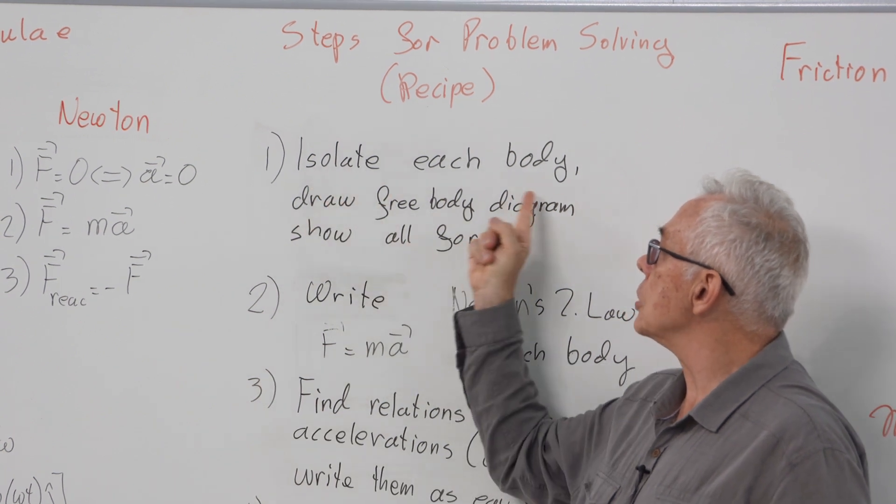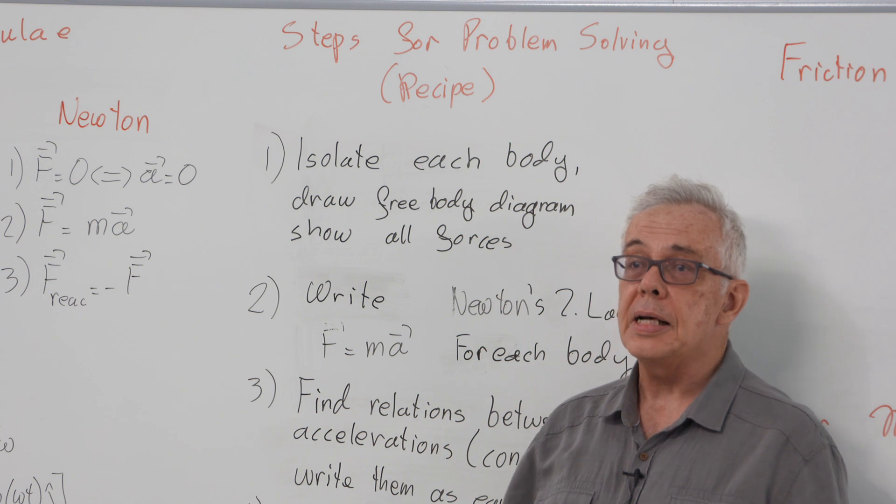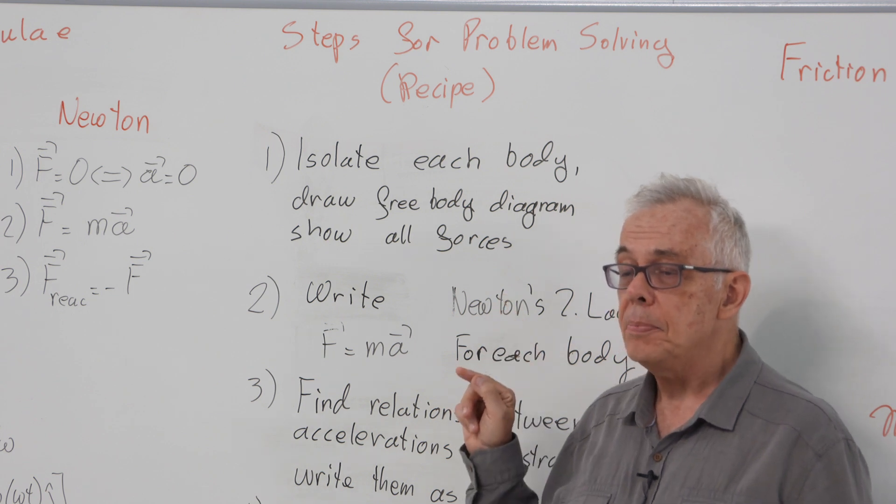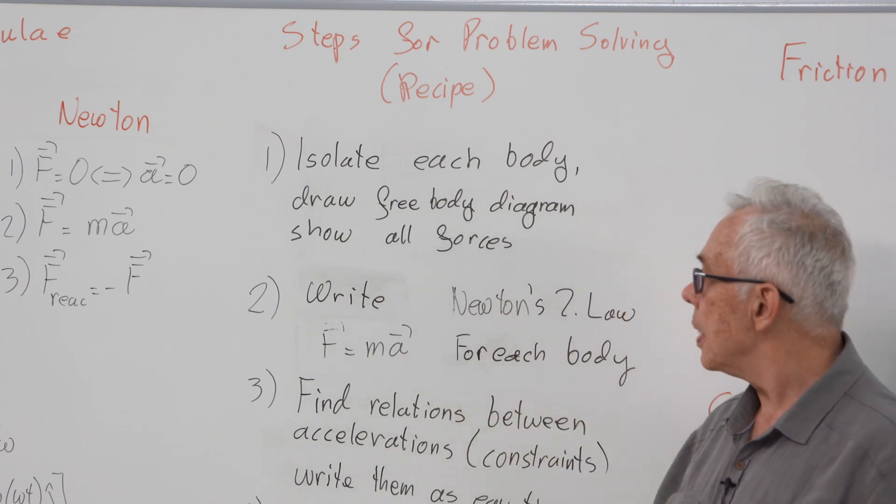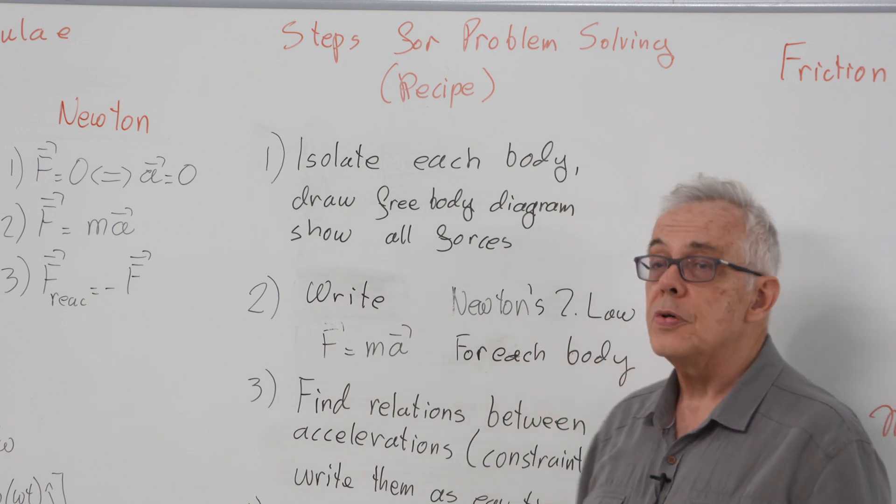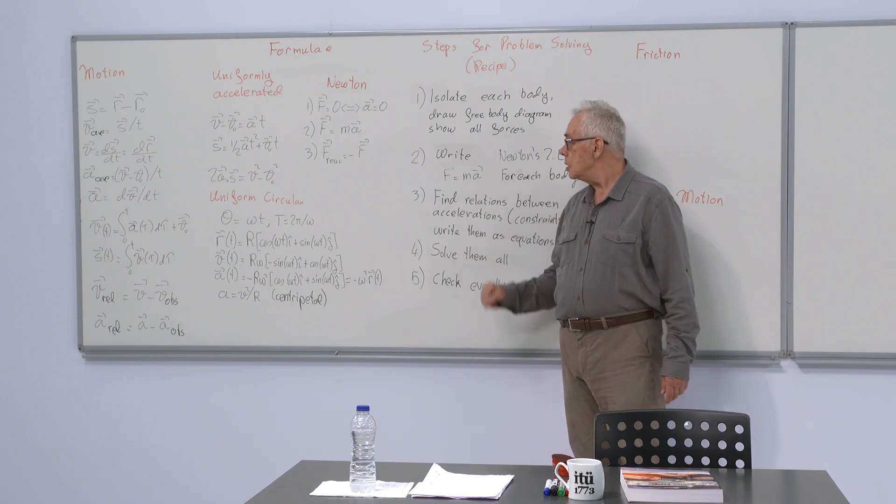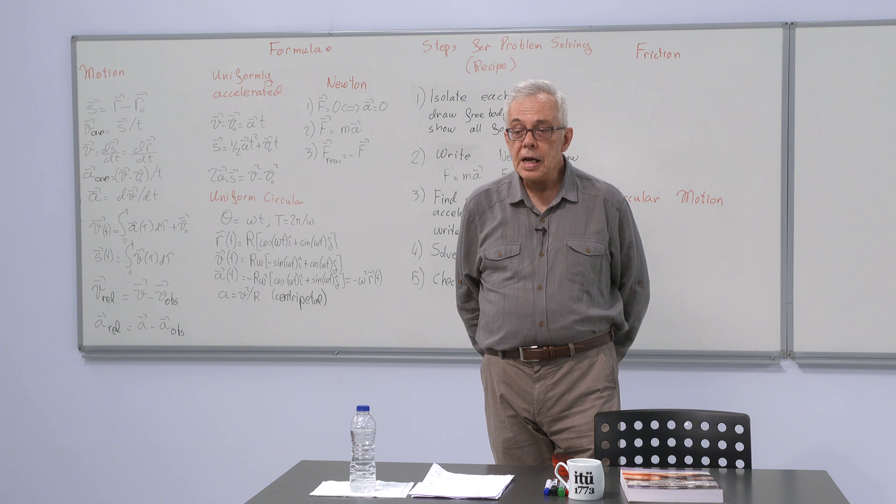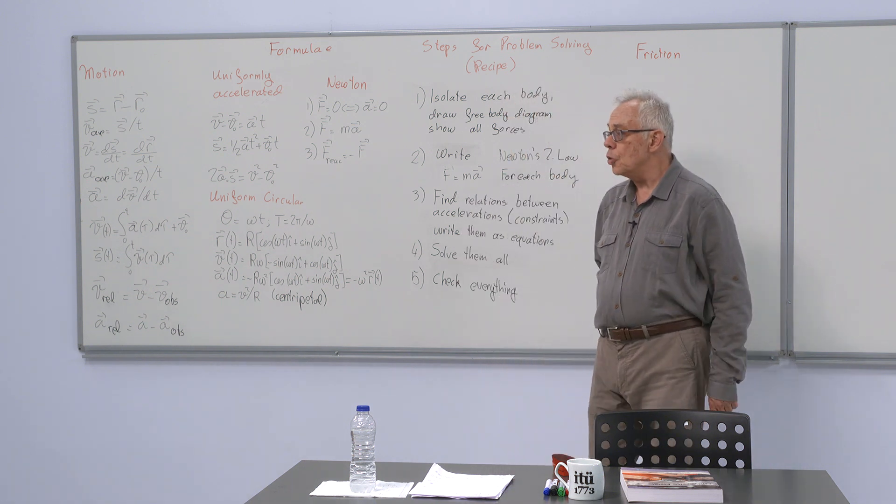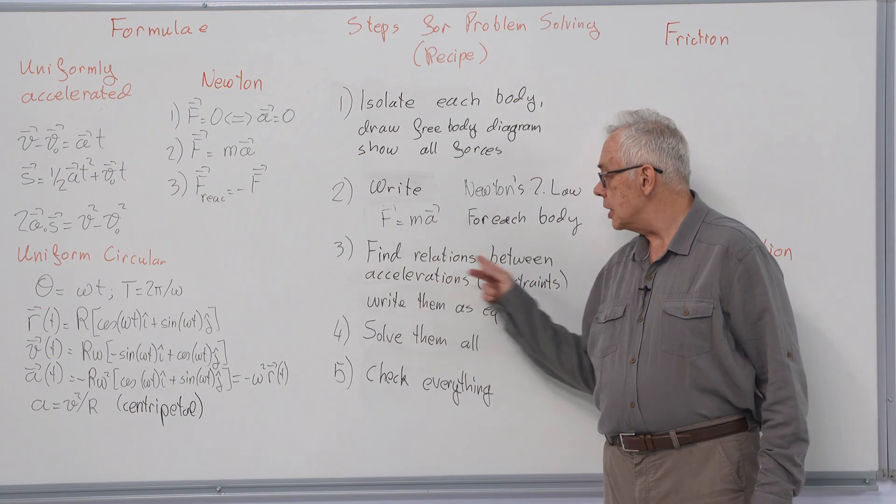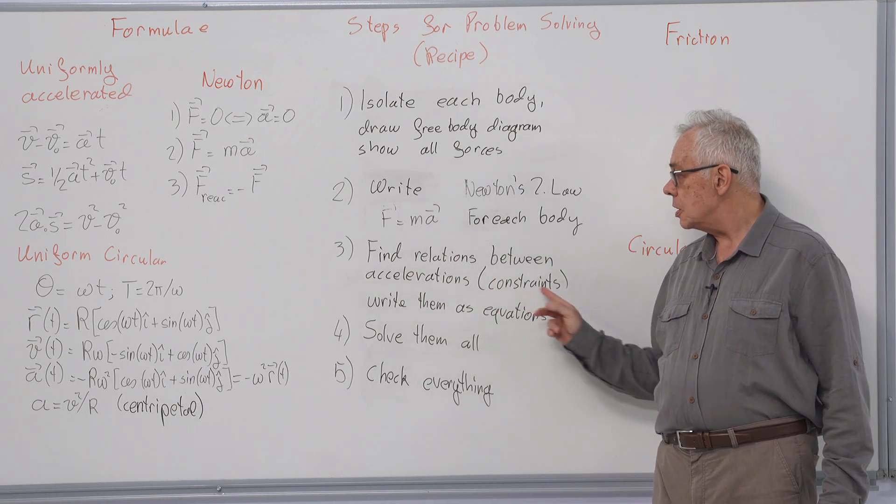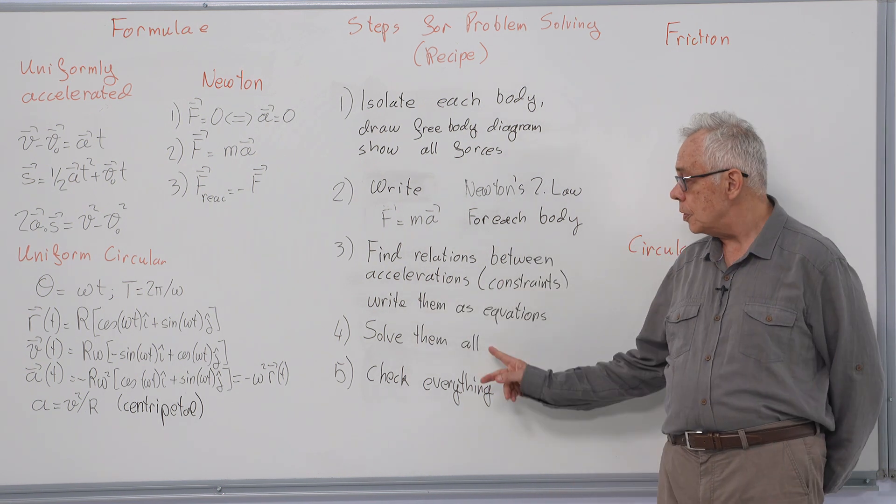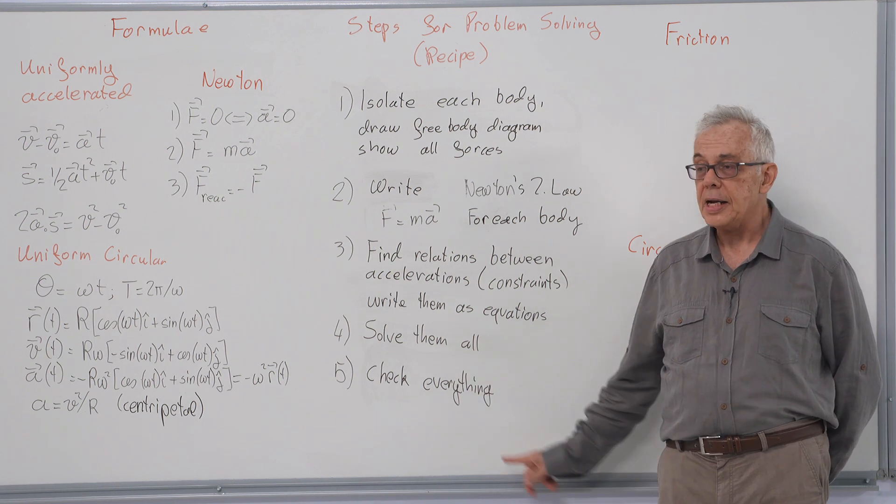Our recipe involves isolating each body and drawing a free body diagram for it, showing all forces acting on that particular body. We write Newton's second law for each body. If there are internal forces, we will have more unknowns and need more equations. In this case, we find relations between accelerations—constraints—and write them as equations. When we have as many equations as unknowns, we solve them all and check everything.